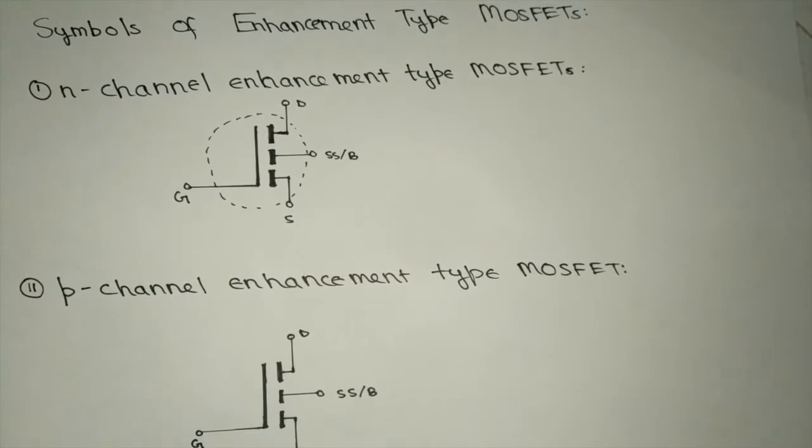Now we have the symbols of enhancement type MOSFETs. There are two types of enhancement type MOSFETs: N channel enhancement type MOSFET and P channel enhancement type MOSFET.